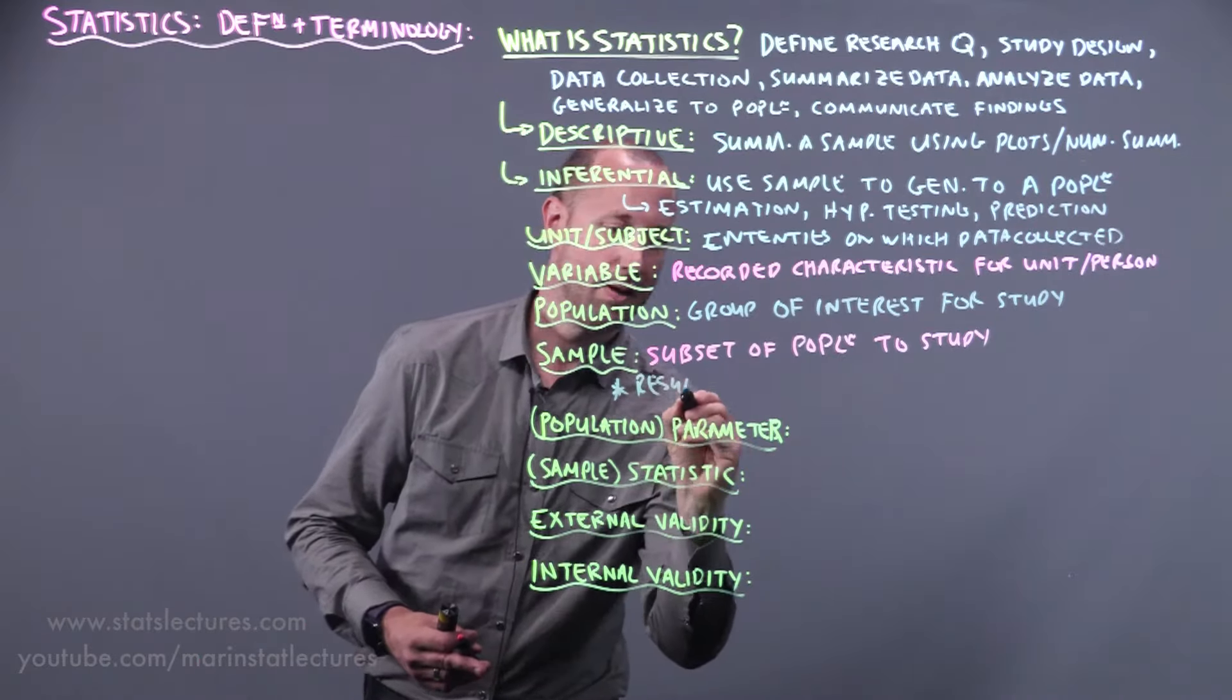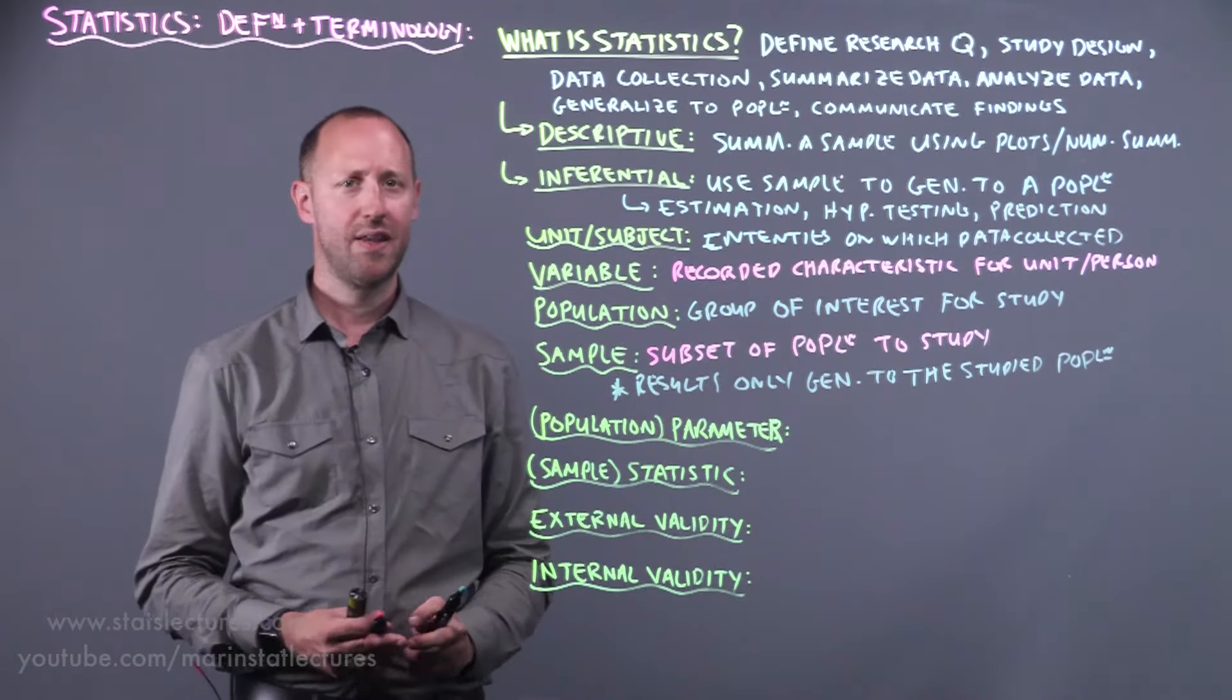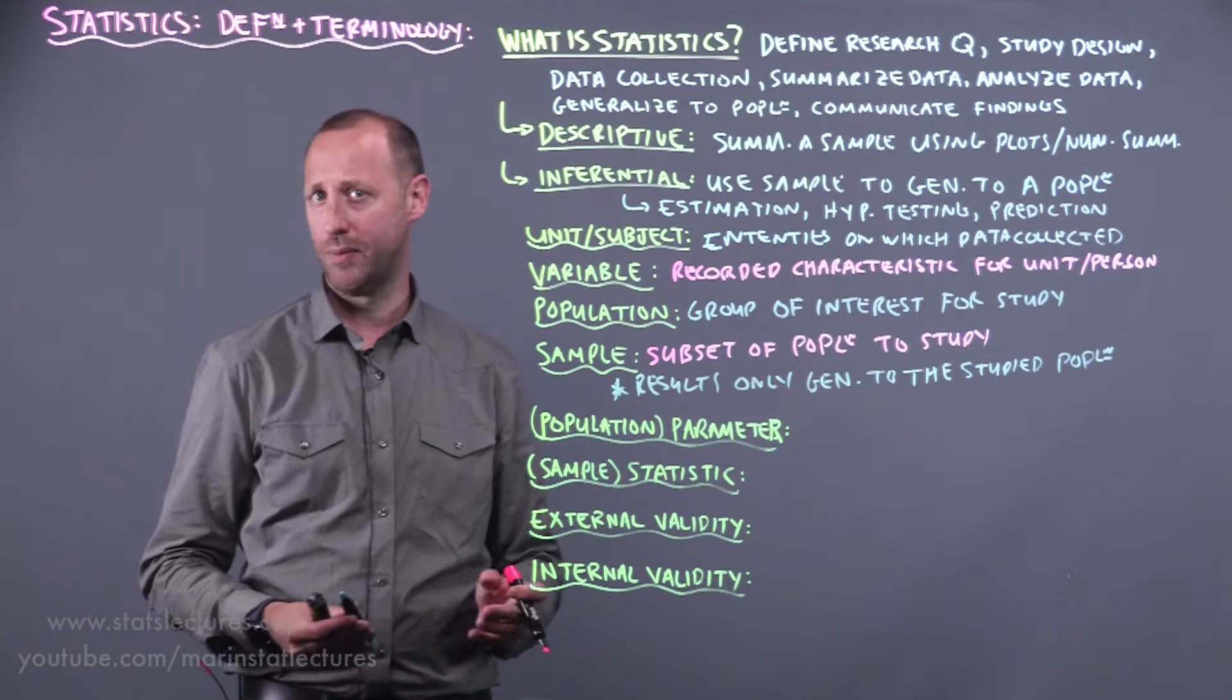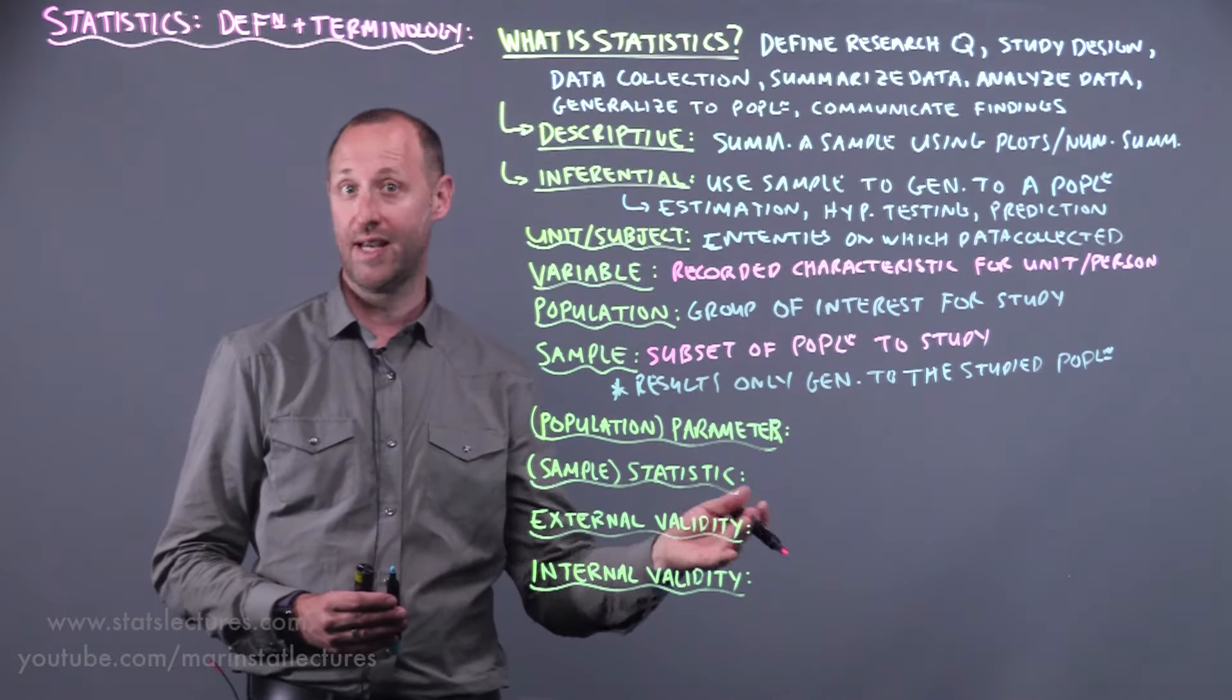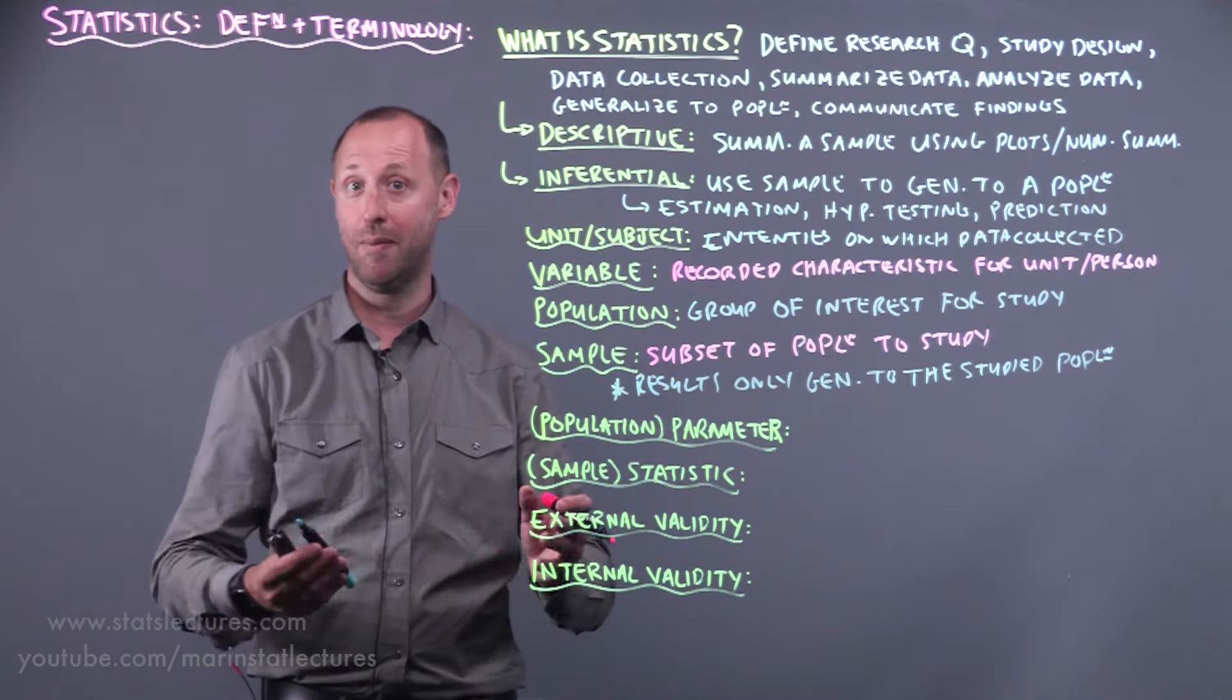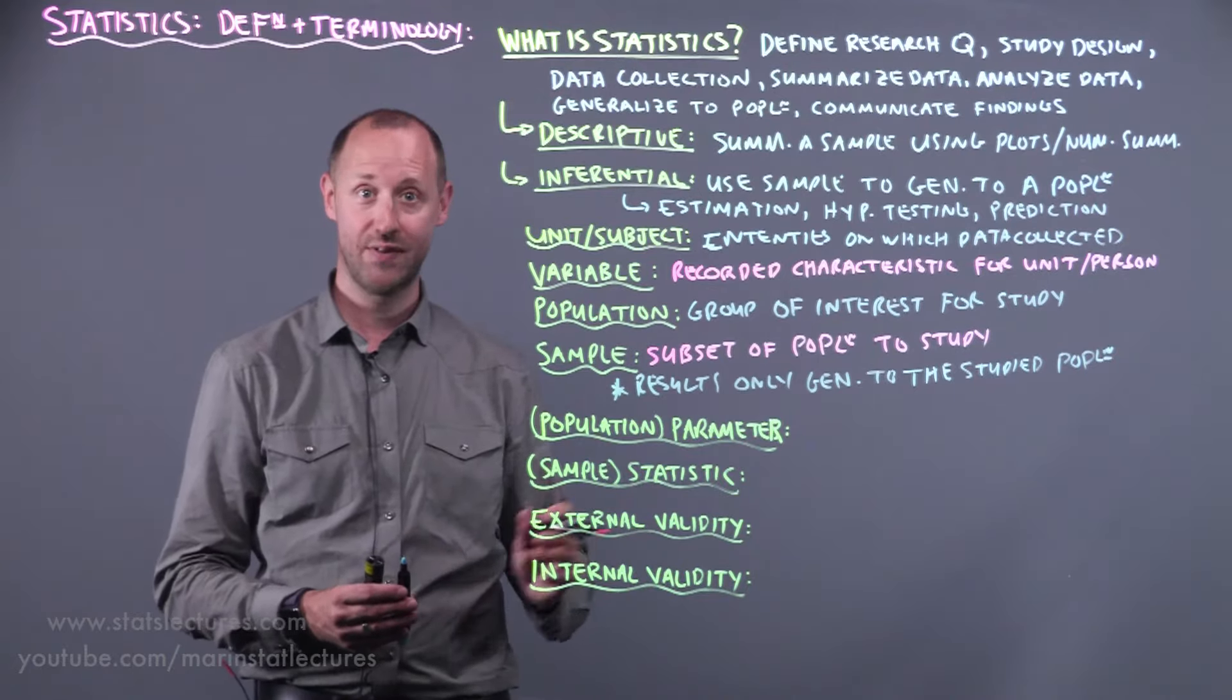The results of any study are only generalizable to the studied population. And what I mean by that is suppose our population is we'd like to study something about a particular group with a particular disease, and our sample we're only able to get those who are in a hospital in a very severe or late stage of the disease. While we'd like to generalize back to the population of people with that disease, we actually only can generalize back to the population of people with that disease in late or severe stages.